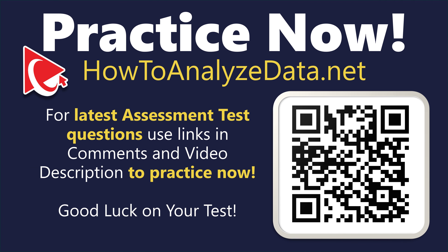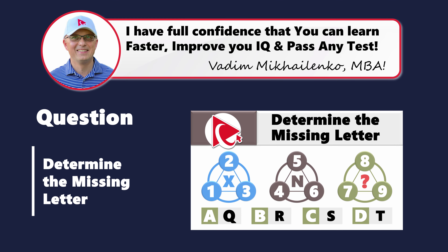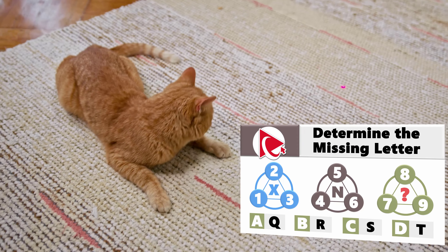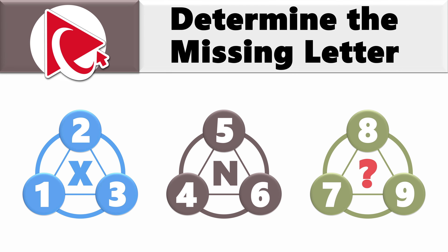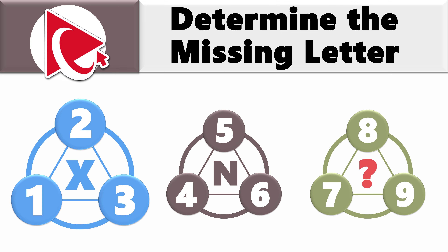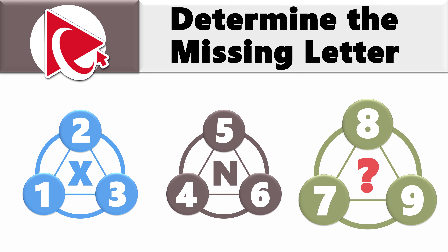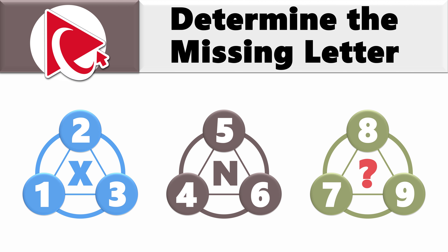This test question is more complex than convincing your cat that the red dot is not the actual enemy. Can you outsmart the laser pointer of perplexity? You are presented with cool-looking shapes that have numbers on the outside and a letter inside. The first shape has numbers 1, 2, and 3, and the letter X inside. The second shape has numbers 4, 5, and 6, and the letter N. In the third shape, the numbers are 7, 8, and 9, and there's a missing letter you need to determine.